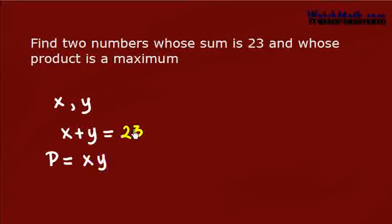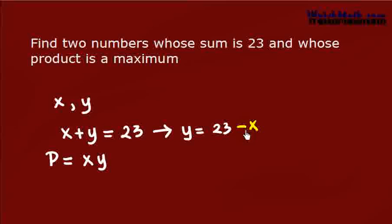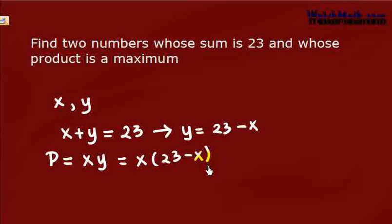Now from the first equation, we can solve for y. So y equals 23 minus x. And hence, this product can be written as x times (23 minus x), or 23x minus x squared.